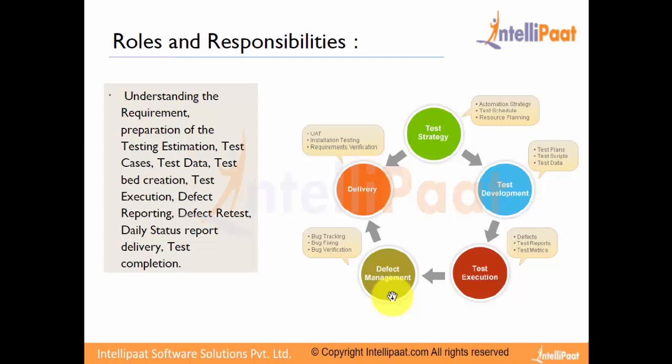Whenever a test plan is executed against any product and a defect is identified, that defect needs to be reported and assigned to the developer so that he or she can look into it and start working on it. As a tester, we need to track the progress of the bug, check if it has been fixed, and if so, retest and verify that it is closed. Once all bugs are fixed, closed, and verified, we deliver an OK-tested product.